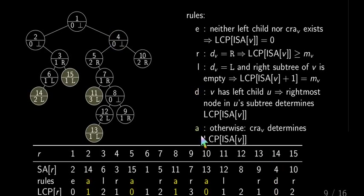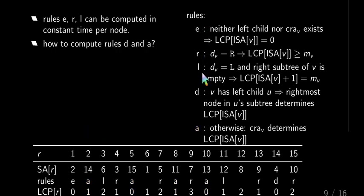In another case, it's A, which means we don't have a left child. And if we don't have a left child, then the preceding suffix is actually cray. So we have to find your cray, and the cray determines the LCP value. Like for 11, the cray gives us the value of 1. Now looking at the rules, it's easy to evaluate E, R, and L, but it has not been so clear how to do D or A.